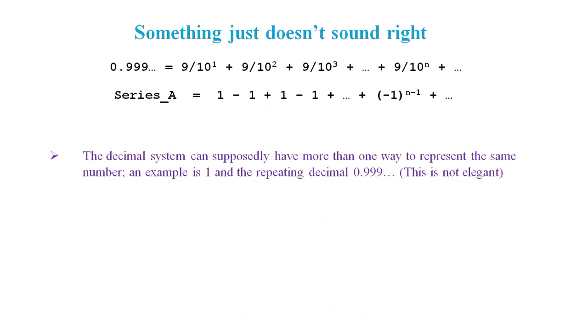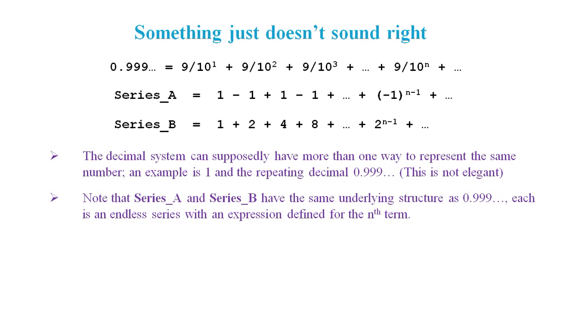Let's take a look at a series. Here we've got 1 minus 1 plus 1 minus 1, and that carries on indefinitely. And we've got series B where we've got 1 plus 2 plus 4 plus 8 and so on. Note that series A and series B have the same underlying structure as 0.9 recurring. Each is an endless series with an expression defined for the nth term. In series A, the nth term alternates between plus 1 and minus 1. And in series B, the nth term is getting bigger and bigger.